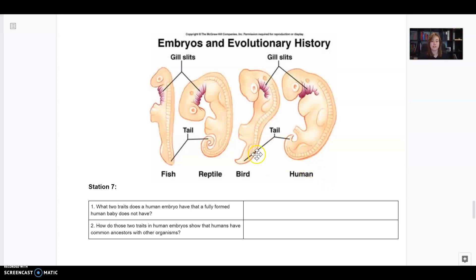That means we're related. So humans are related to birds and reptiles and fish because our embryos look so similar. So that's evidence of evolution. It's evidence that we had a common ancestor and then evolved from that ancestor and became different. And the two traits that embryos have in common are gills and a tail.